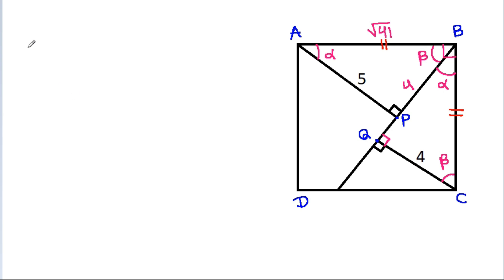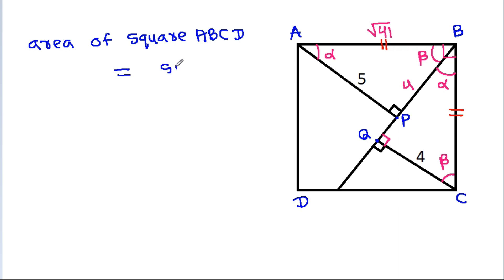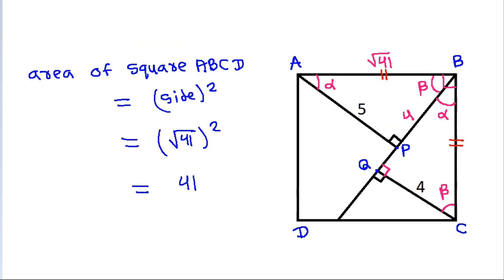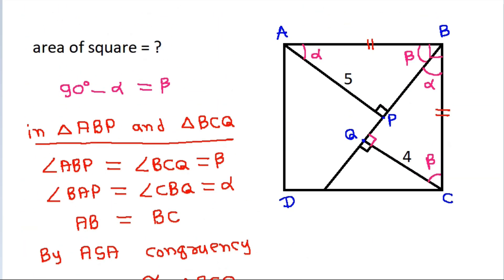And now the area of square ABCD is equal to side squared. The side length is the square root of 41, so the area equals the square root of 41 squared, which equals 41. So the area is 41.